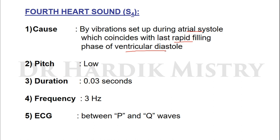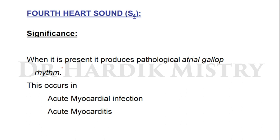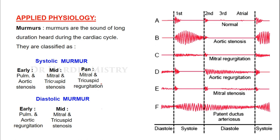The fourth heart sound is caused by vibrations set up during atrial systole, which coincides with the last rapid filling phase of ventricular diastole. Pitch is low; duration is 0.03 seconds; frequency is 3 Hz. On ECG it falls between the P and Q waves. Its significance: when present, it produces a pathological atrial gallop rhythm, occurring in acute myocardial infarction and acute myocarditis.